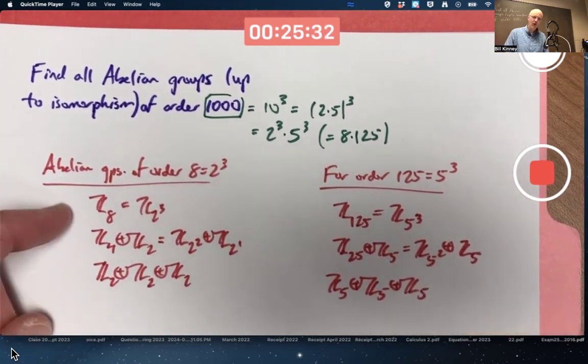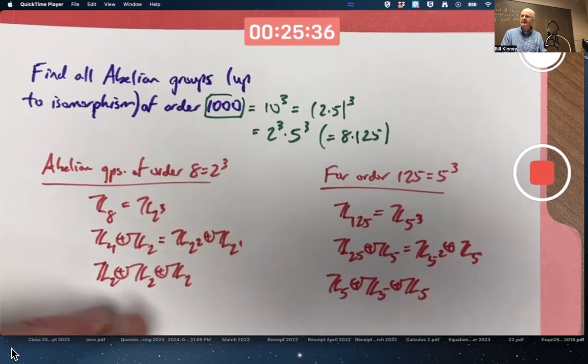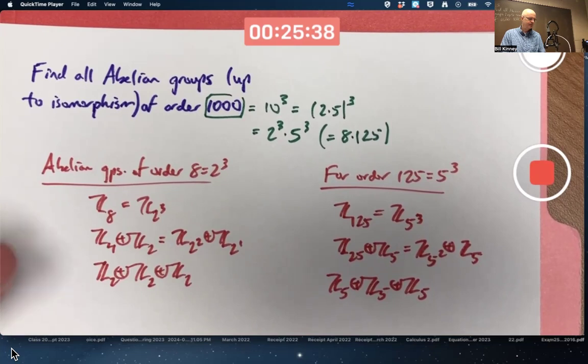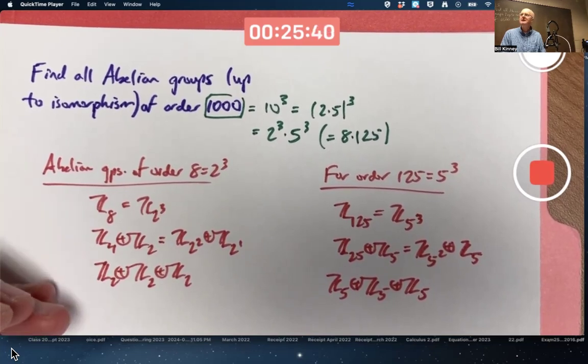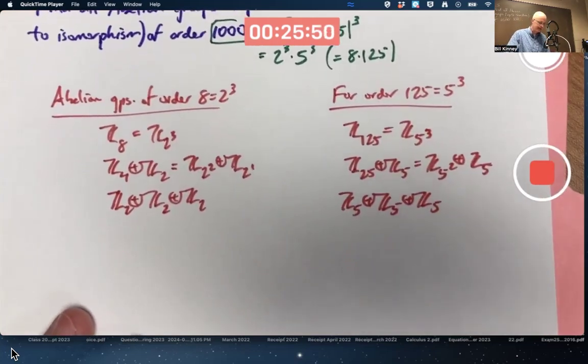Now combine these. For each one over here, combine it with one over there. Since each one of these columns has three groups in it, altogether you're going to have 3 times 3, 9 possibilities for the groups of order 1000.